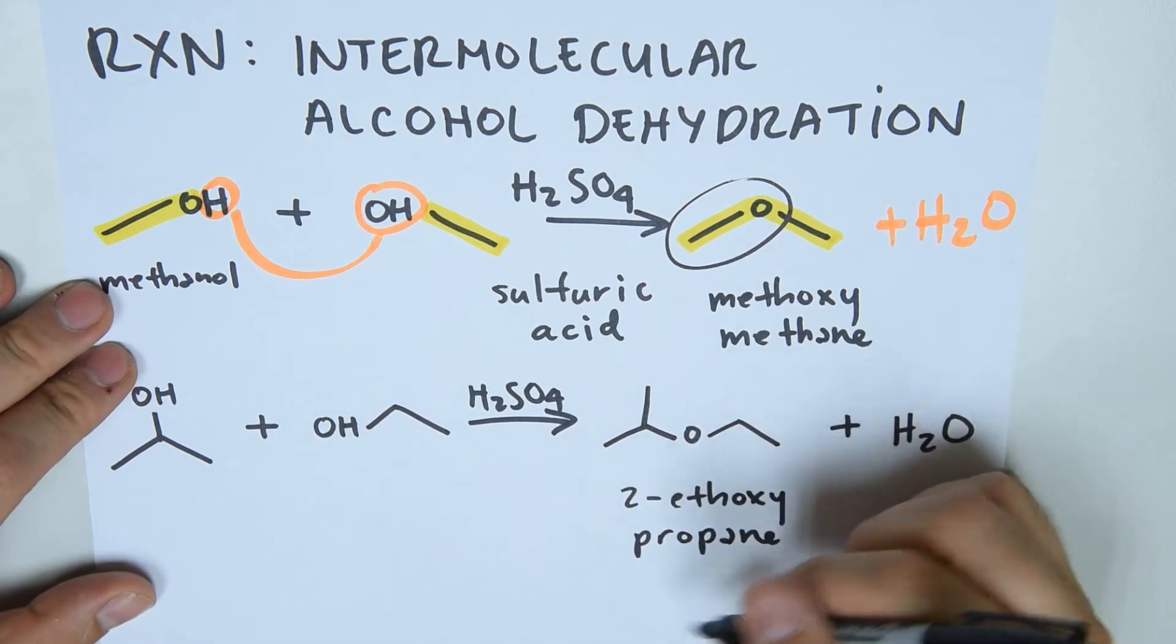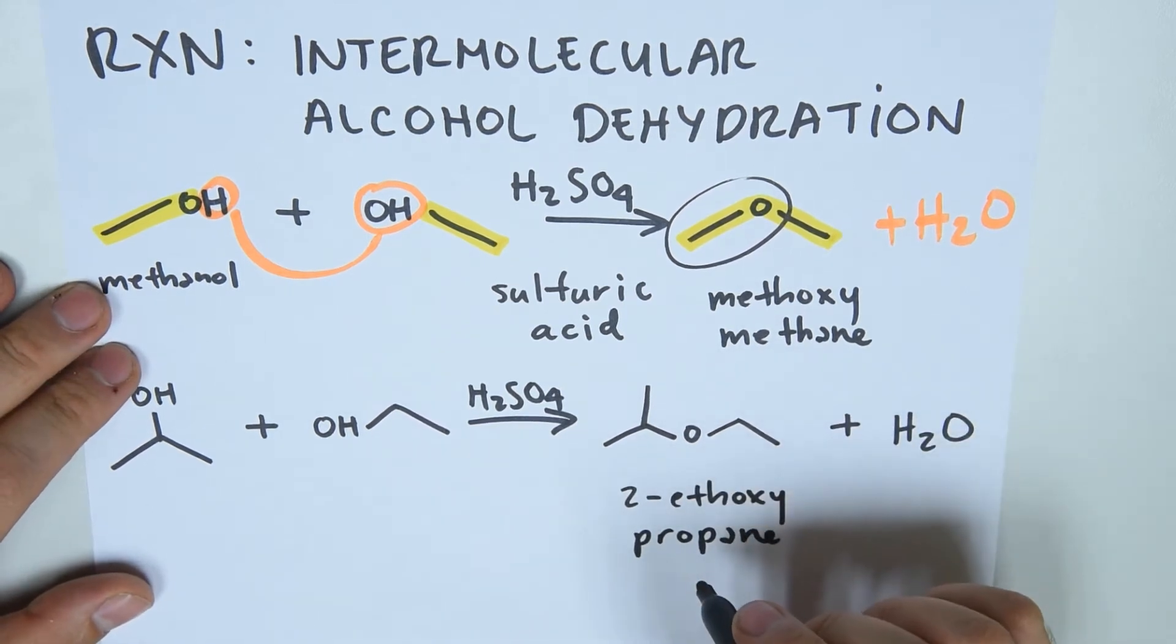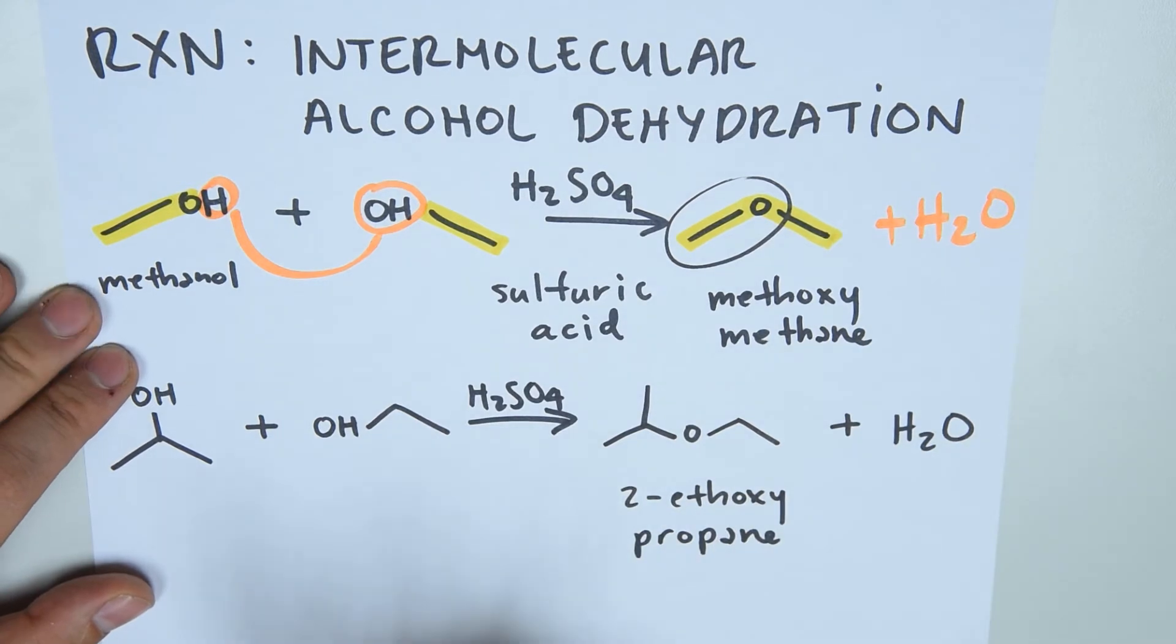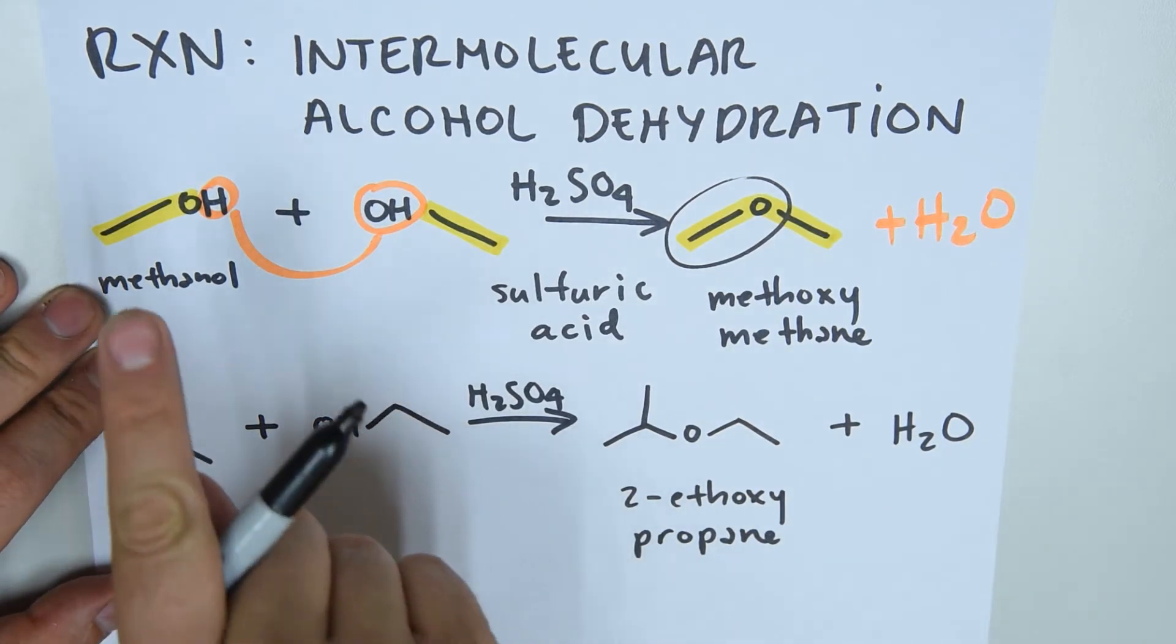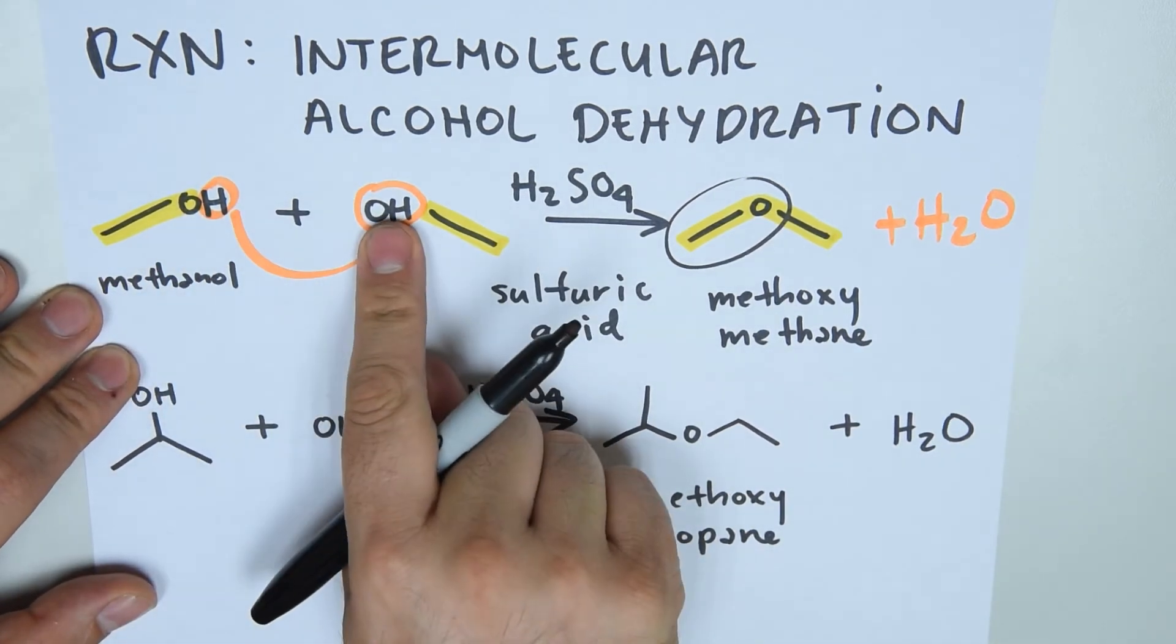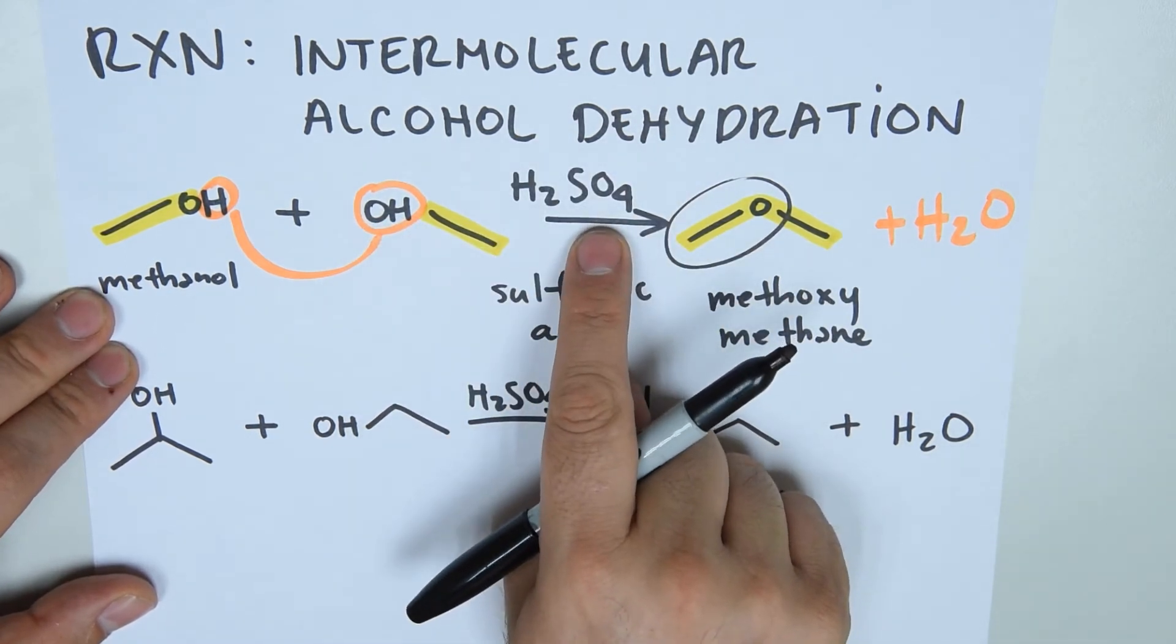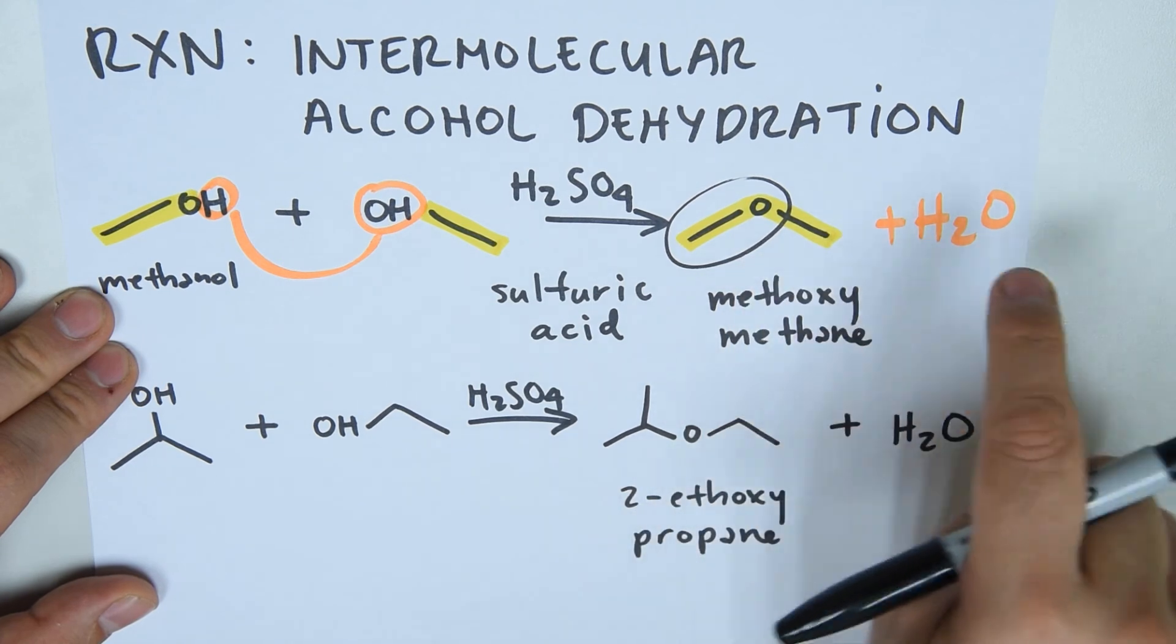If you don't remember how to name these, refer back to the video on naming ethers in IUPAC style. However, let's remember the general formula: alcohol plus another alcohol using sulfuric acid to produce an ether and a molecule of water.